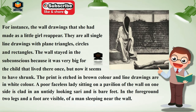In the foreground, two legs and a foot are visible at the very front of the picture, belonging to a man sleeping near the wall.